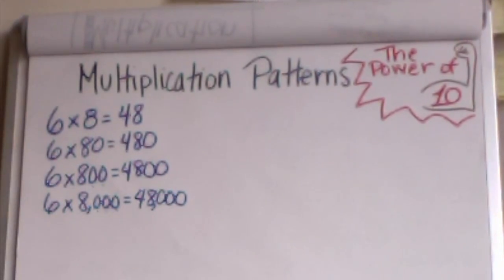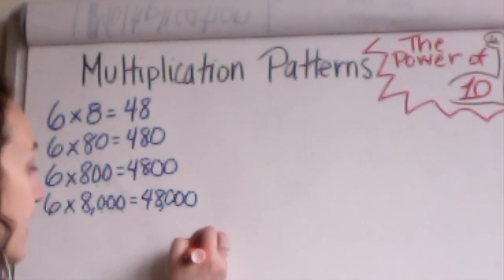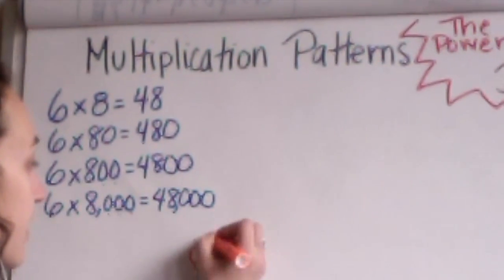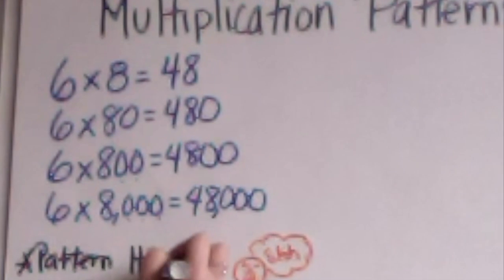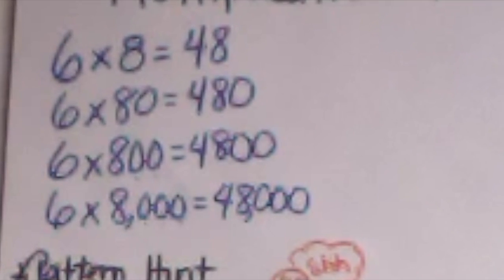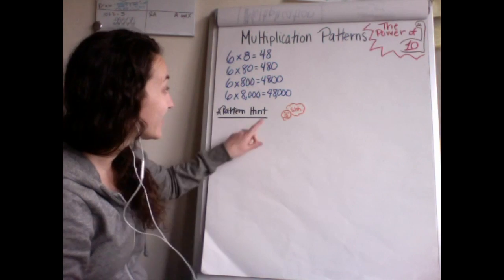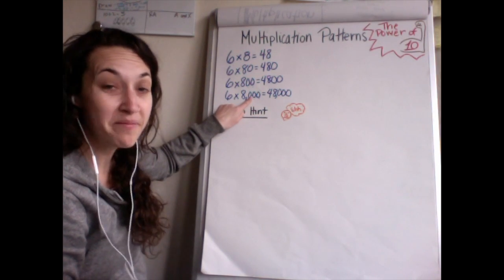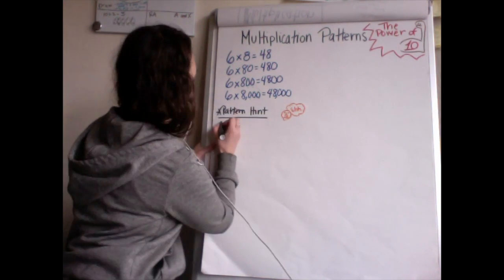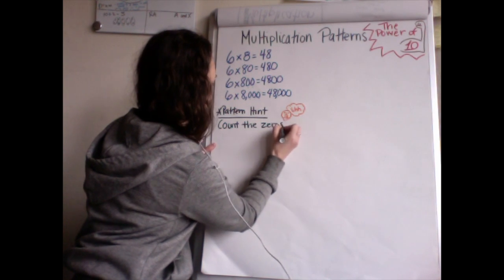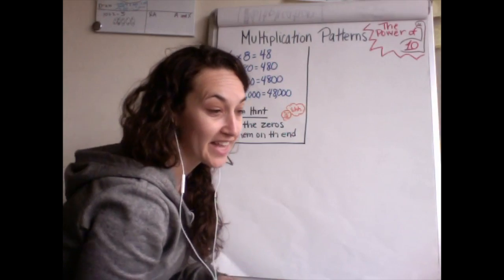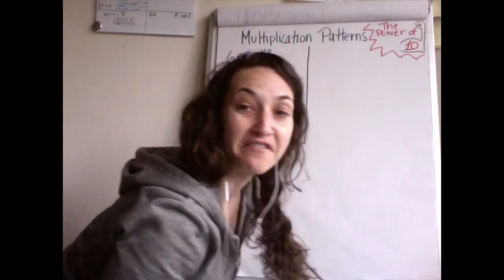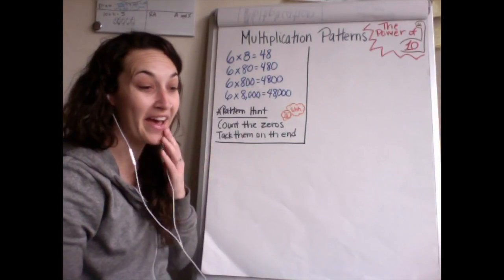So there's a hint. The hint is that there's a pattern. I don't want you to spend all day figuring out the pattern, but just take a look at it. The hint is to count the zeros you're multiplying by and just tack them on the end. Go ahead and do slides number three and four using our pattern hint.